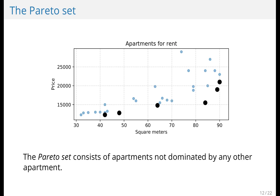Now, this is really what you want to look at in this situation, because if you choose any of the blue apartments, then I can find an apartment in black that's both cheaper and has more square meters than any apartment you just chose. So there's no reason at all to prefer any of the blue apartments, given the knowledge that we have of square meters and price.